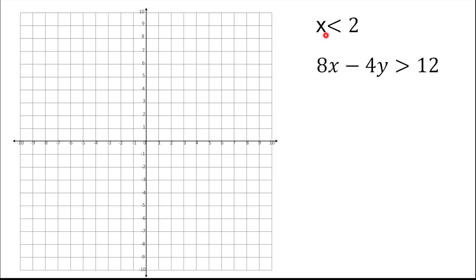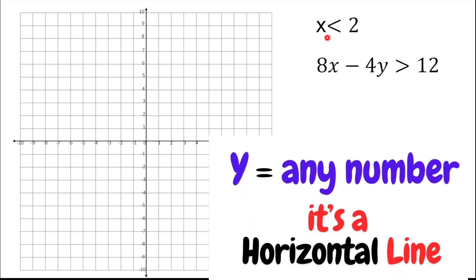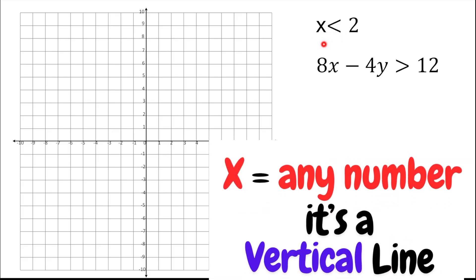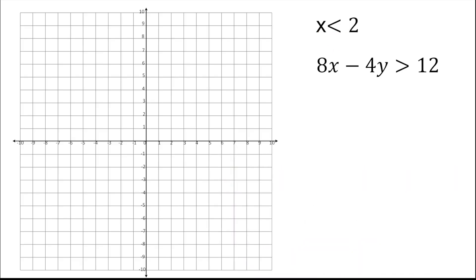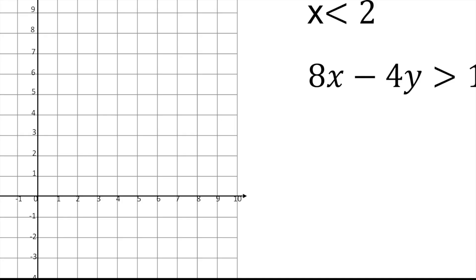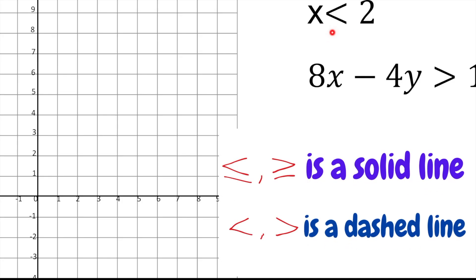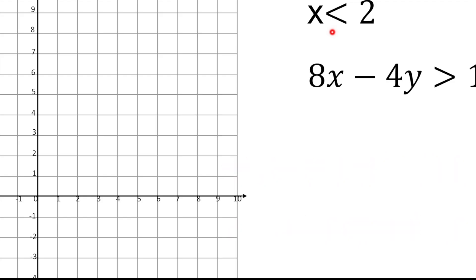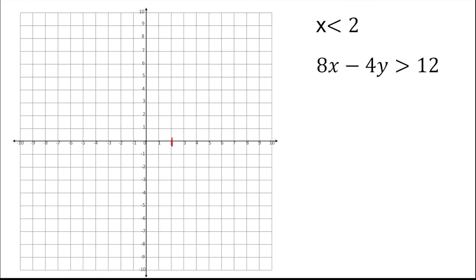Now let's practice a second system. The first inequality is x < 2, and the second is 8x − 4y > 12. Taking the first inequality: we have only one variable. Since the variable is X, this is a vertical line through 2. Checking the inequality symbol — no equal sign underneath — so this is a dashed line.